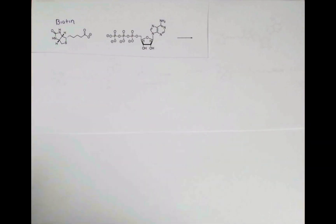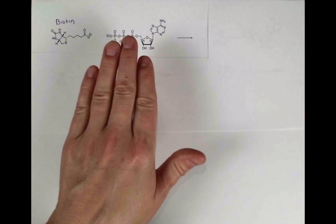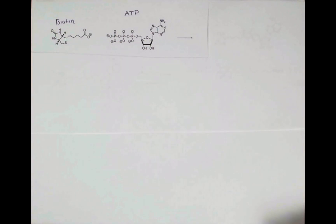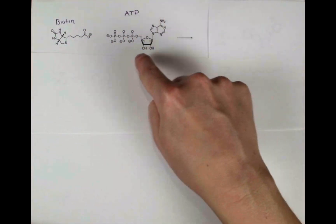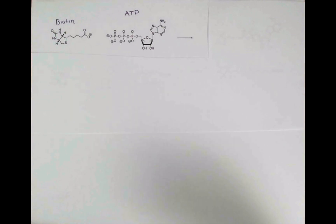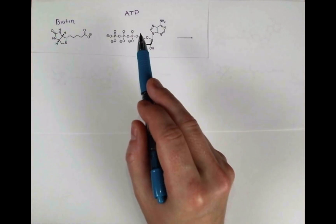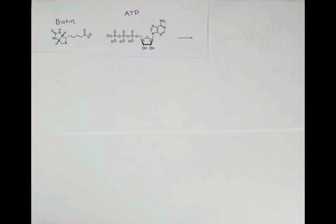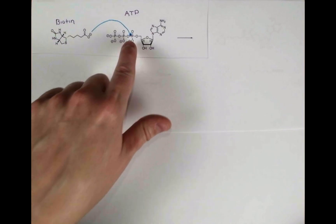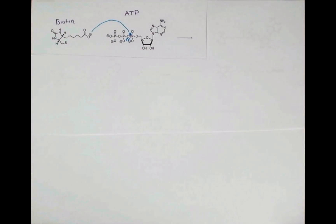So biotin gets activated first. It undergoes a reaction with ATP. In this reaction, biotin is going to become bound to this entire piece of the molecule. So this carboxylate will attack this phosphorus atom, kicking off pyrophosphate, which is two phosphate groups linked together. We can show our first arrow making the bond to phosphorus, and then we'll kick off pyrophosphate as a leaving group.